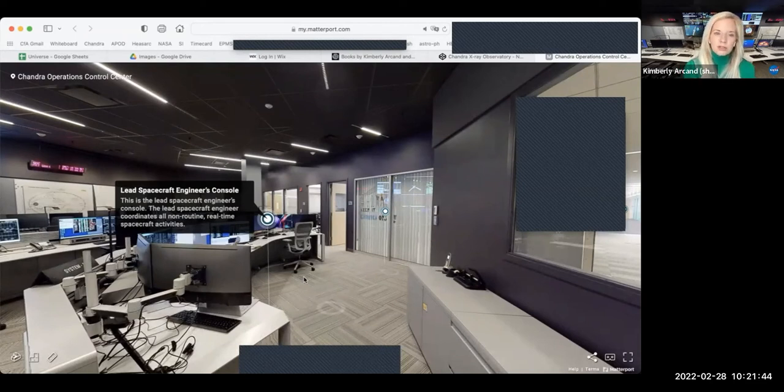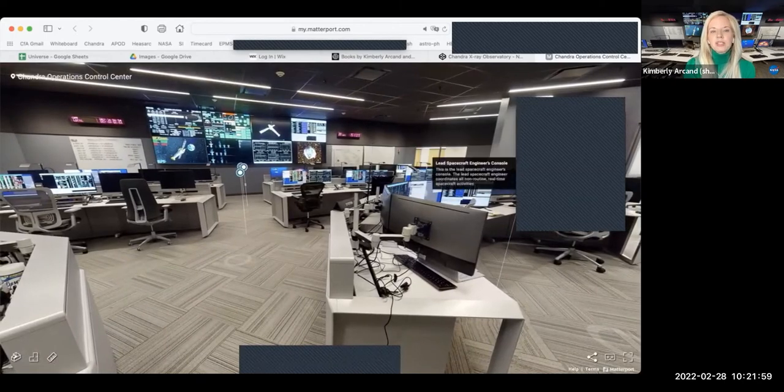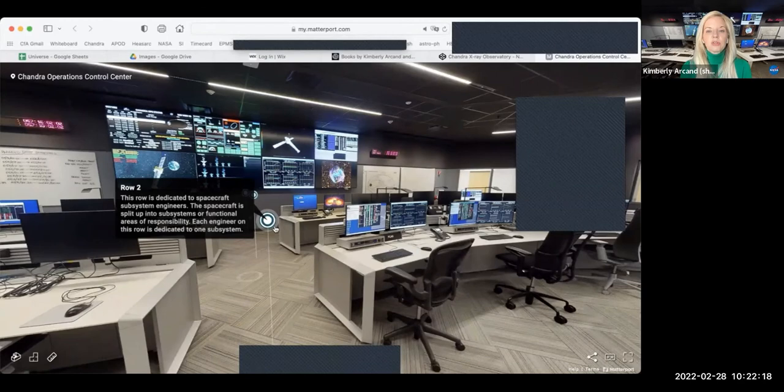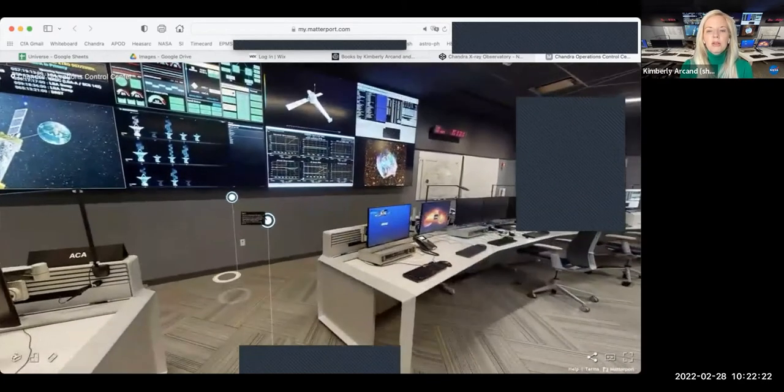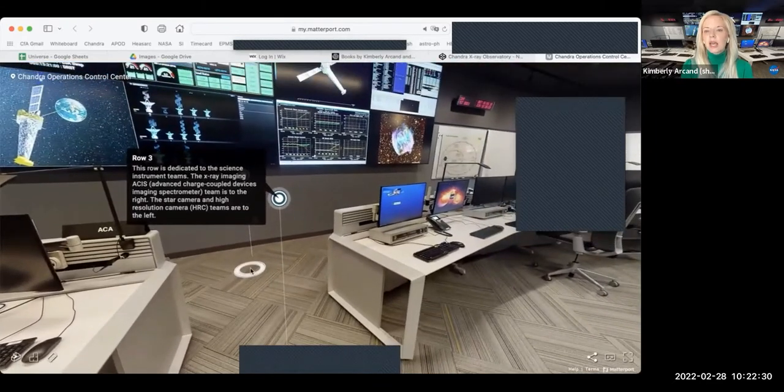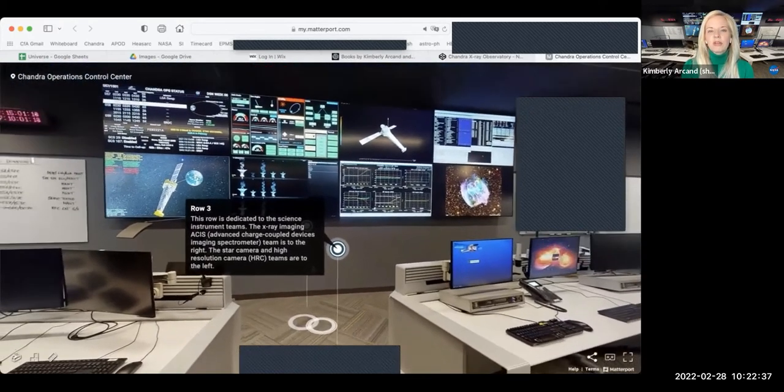On the right side is where the lead spacecraft console is. That's where the lead spacecraft engineer sits. And that person is making sure to do all of those sort of non-routine real-time activities and coordinating everything that Chandra is going to be pointing towards and looking at. And we can go down the middle of the aisle here. And there are two more rows of computer consoles. This first row right in front of us here, this is where the spacecraft subsystem engineers sit. So making sure that all of the different pieces on the spacecraft that have to operate functionally are able to do so from that set of computer consoles. And then right up here in the front, this is where the science instrument team sit. There are two main instruments on board Chandra, plus its gratings. And these folks right here on the left and the right of this uppermost row, they're able to make sure everything is operating beautifully.